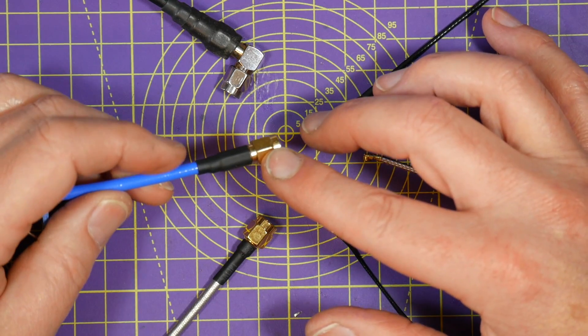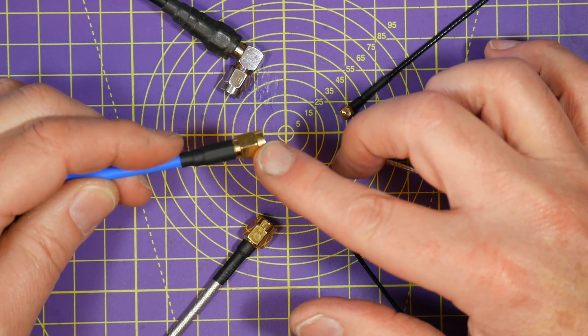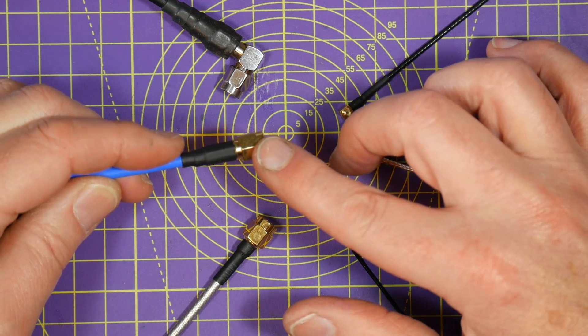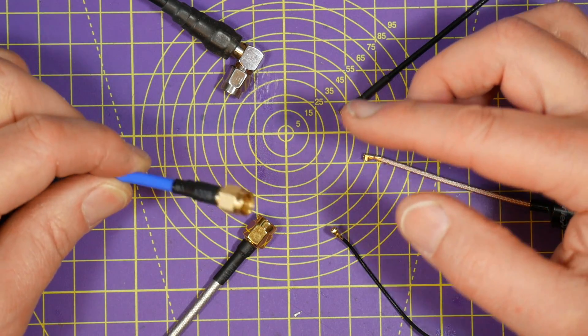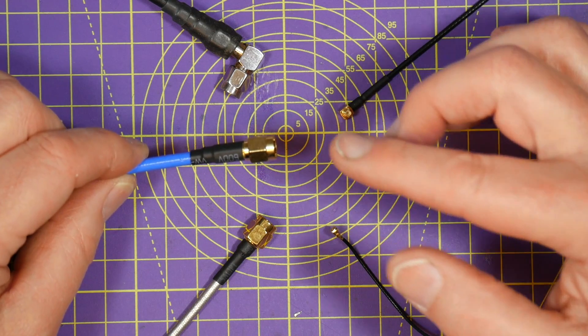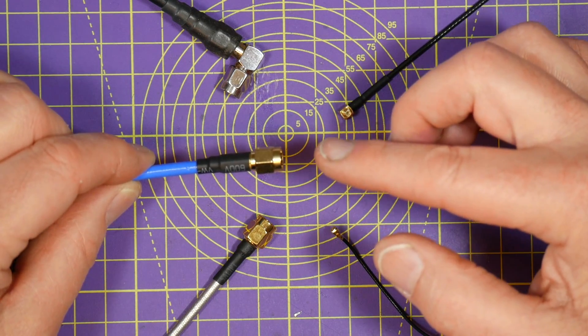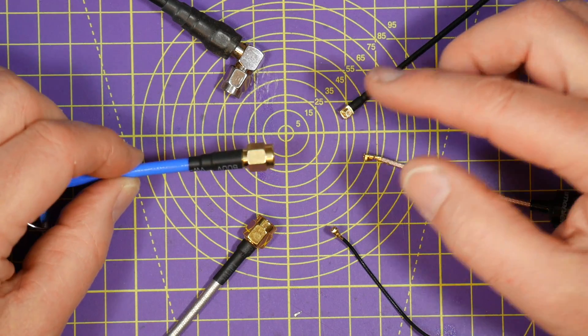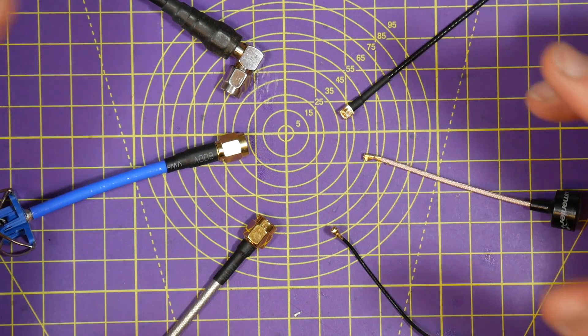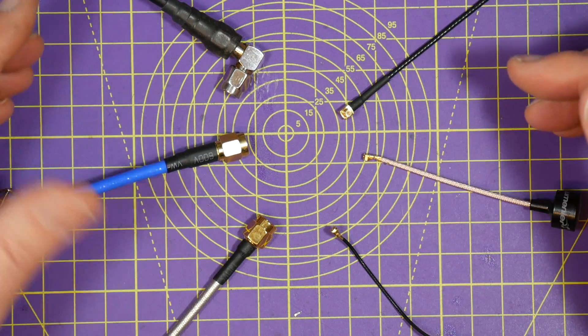When you break an antenna and buy what you think is the right one with the right connector, it turns up and it doesn't fit. So you have to go and buy another one. Antennas aren't that expensive, but it's really annoying having to wait for a new one to turn up, especially when you want to go out and just fly. So here's my complete beginner's guide to VTX antenna connectors.